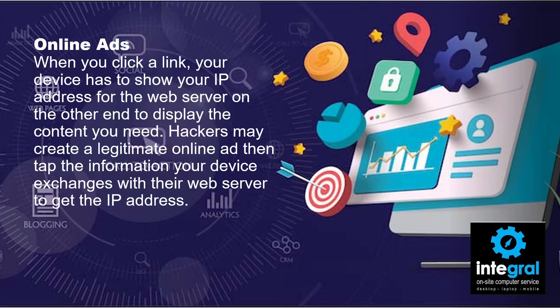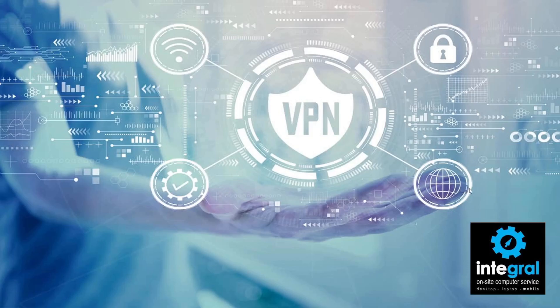Your IP address does change on a constant basis, but sometimes not as often as you think, so you need to be careful where you go on the web. The number one way to prevent criminals from getting your IP address is through a VPN, or virtual private network. A VPN masks your IP address so criminals can't see it while you're surfing the web, and sometimes places you in a different country, making it even harder for criminals to reach you.